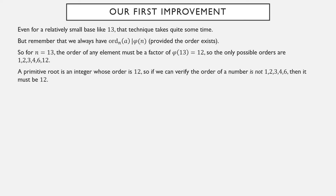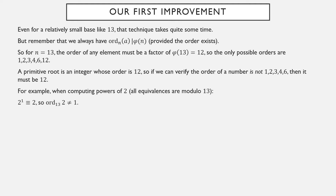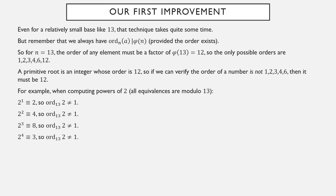So a primitive root is an integer whose order is 12. If we can verify the order is not 1, 2, 3, 4, or 6, then it must be 12. For example, let's compute powers of 2 again. 2 to the first is not equivalent to 1, so the order is not 1. 2 squared is not equivalent to 1, so the order is not 2. 2 cubed is not equivalent to 1, so the order is not 3. 2 to the fourth is not equivalent to 1, so the order is not 4.